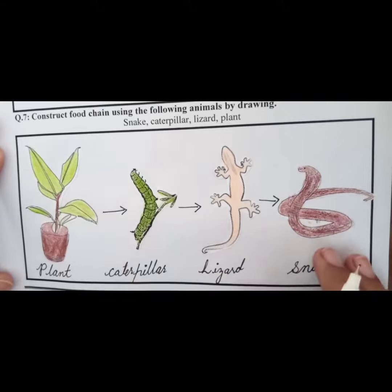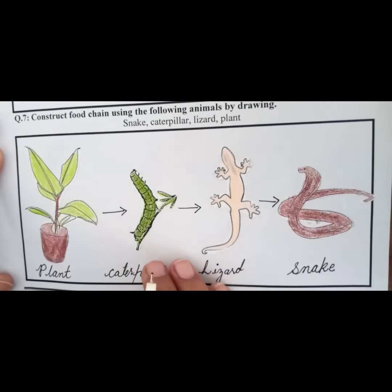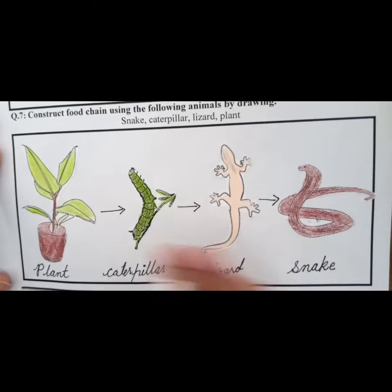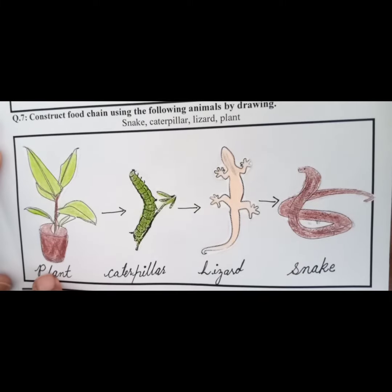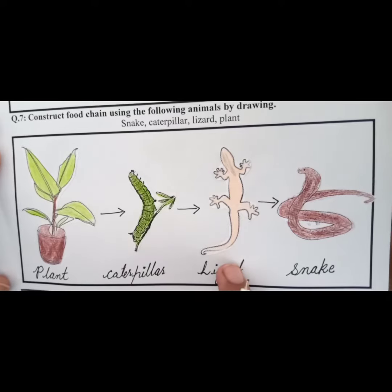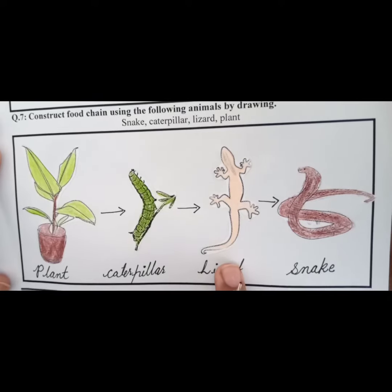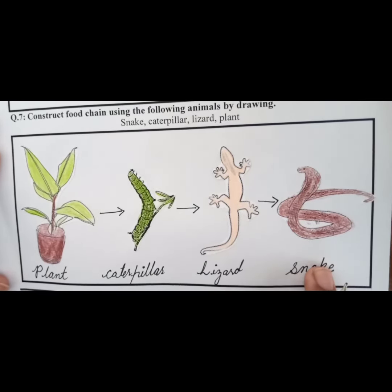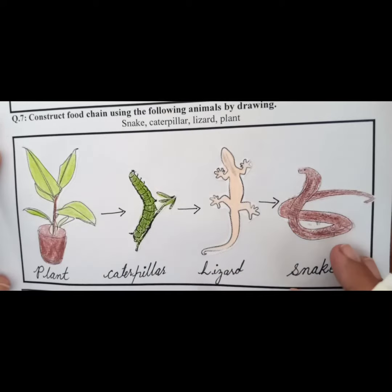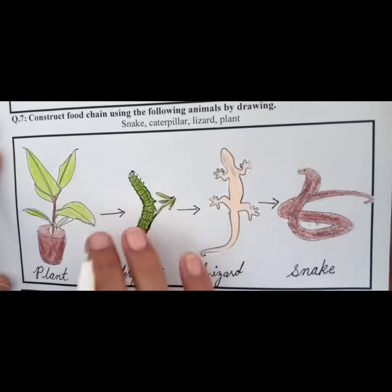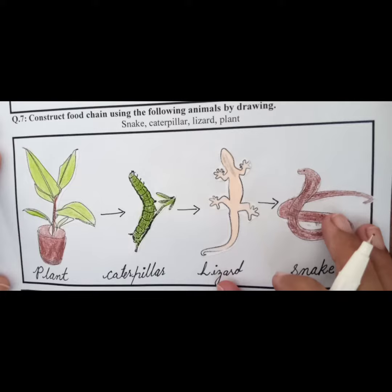Here we have a simple food chain starting from the plant and ending at the snake. In this chain, we have one producer, then the primary consumer, then the secondary consumer, and at last the tertiary consumer. In this way we use all these animals to make a simple food chain in a linear network.